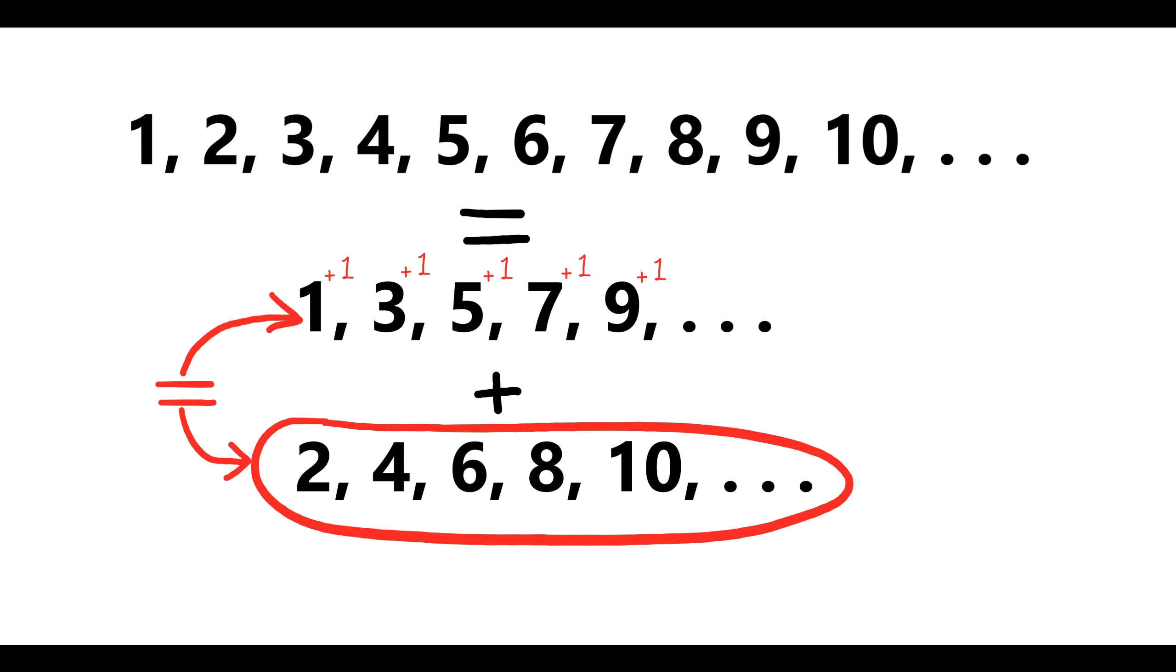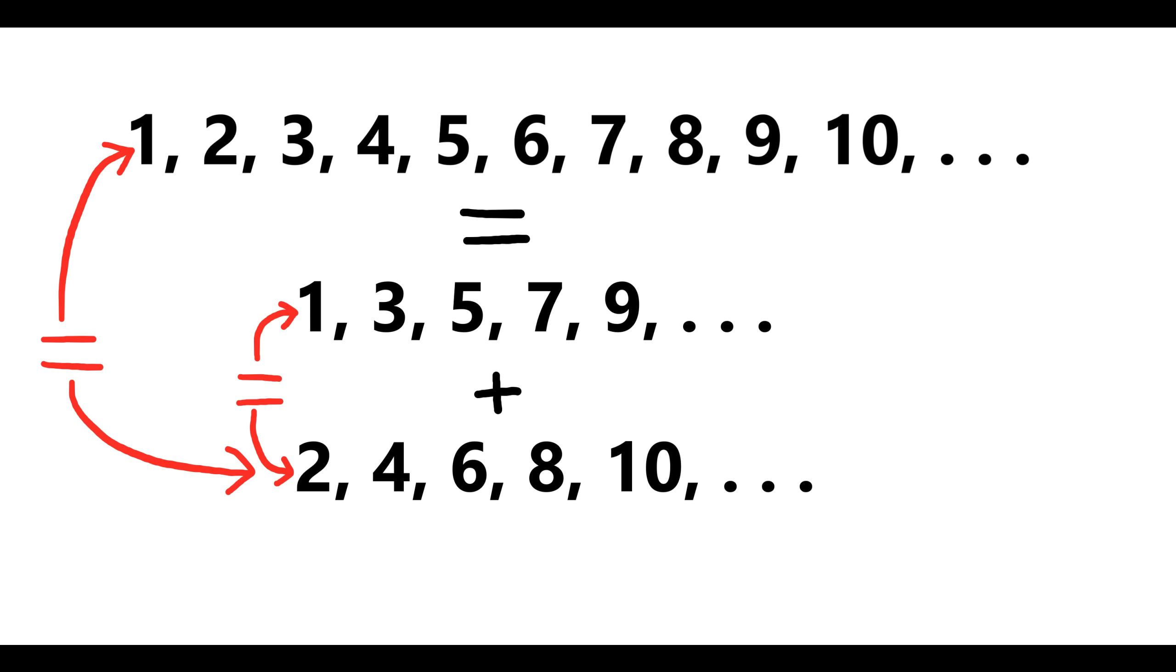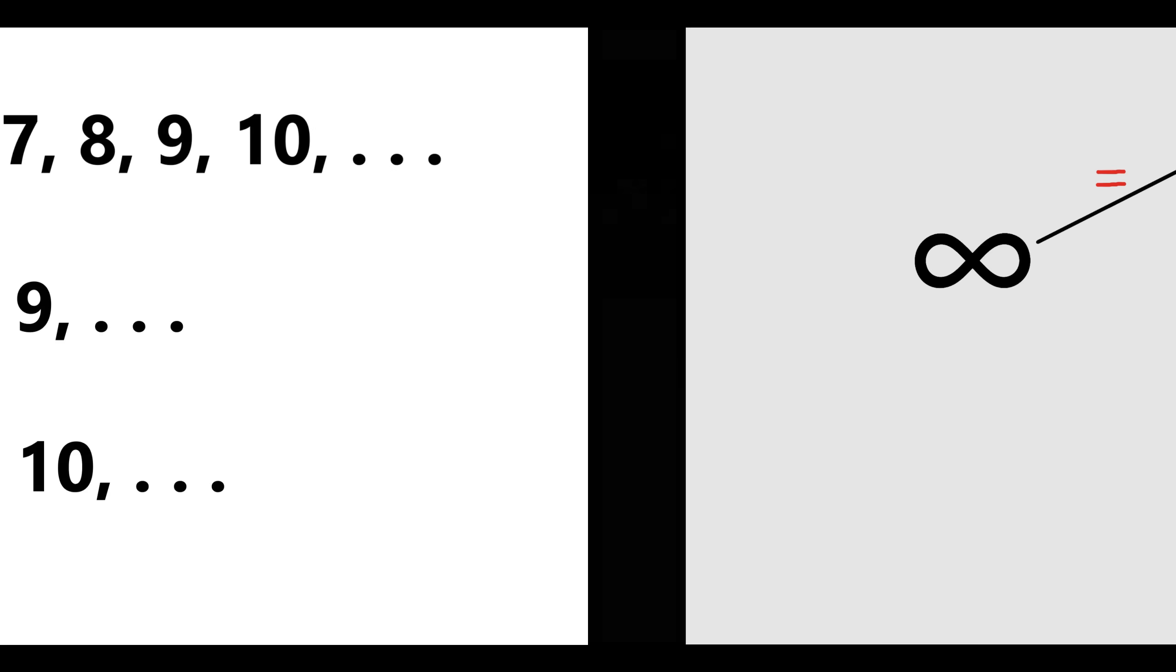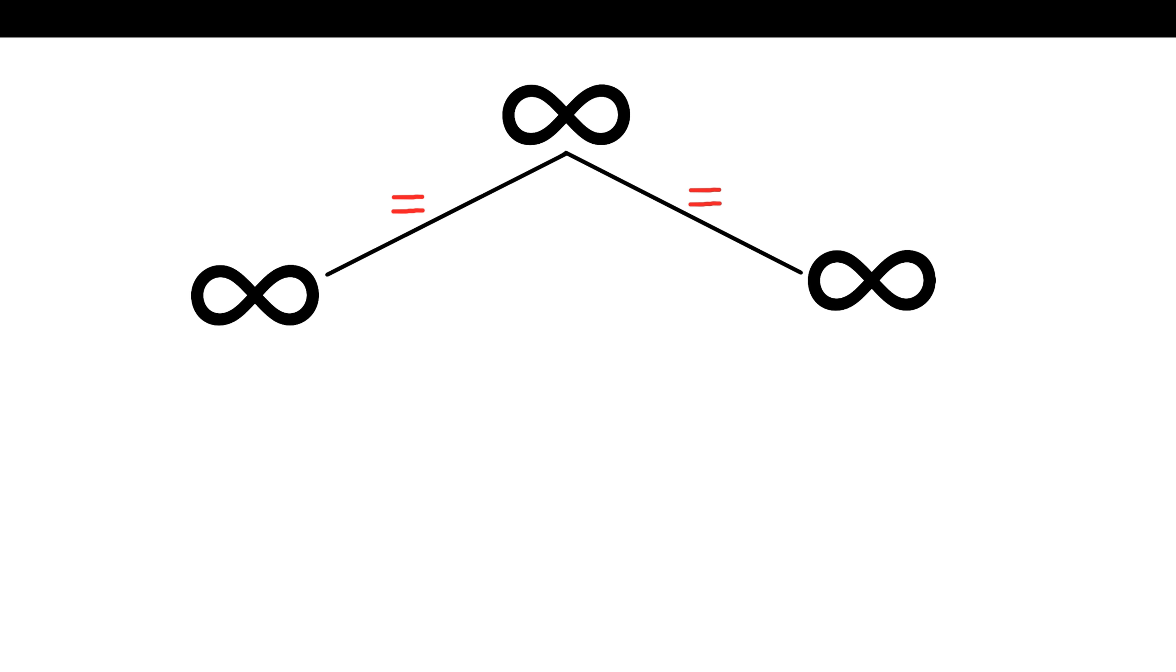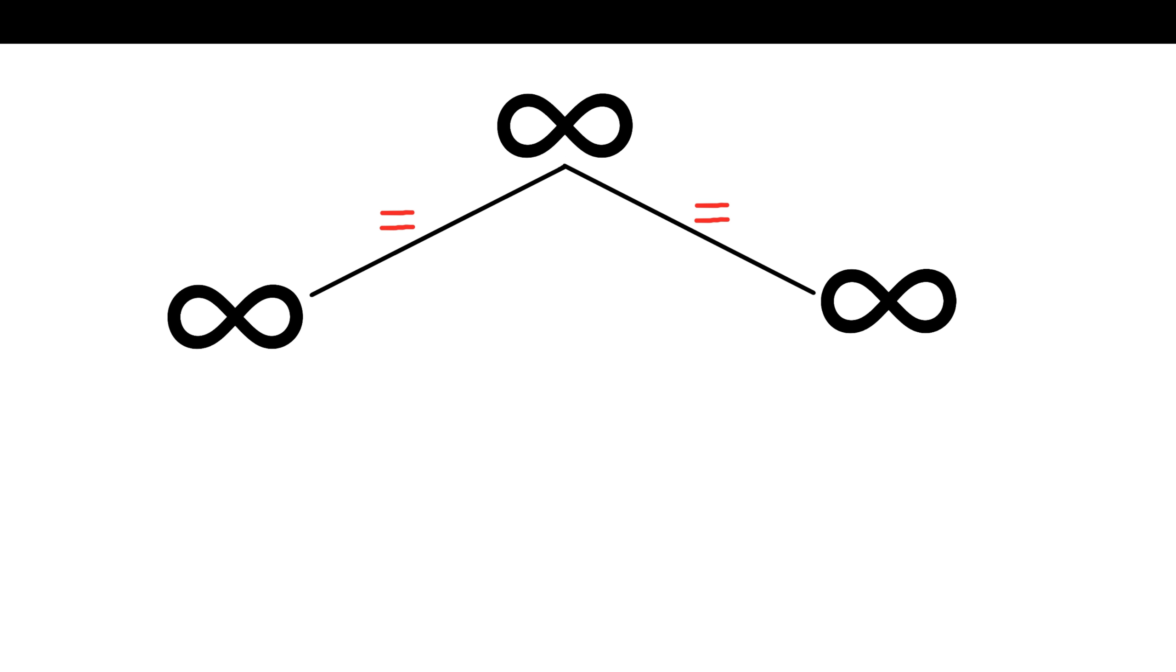But, and here's the unintuitive part, the set of even numbers is the exact same size as the original set. So the set of odd numbers must also be the exact same size as the original set too. So what am I saying here? That I can take a set, split it into two equal halves, and each of the two parts are the same size as the original?